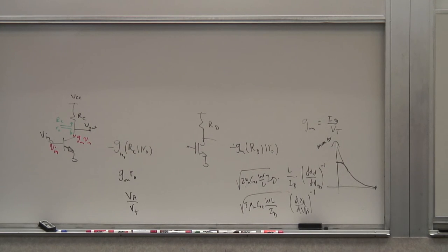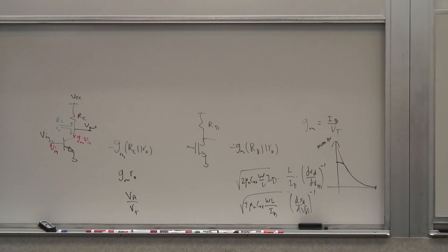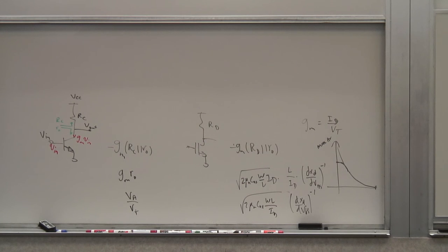In sub-threshold, the dependence of drain current on gate voltage becomes exponential, so gm dependence on current would be something like ID/VT — more like a bipolar. If gm is proportional to ID/VT, then gm·RO has ID canceling, so instead of going to infinity, the maximum intrinsic gain plateaus at a level determined by that sub-threshold behavior. If you want the highest gain from a MOSFET, you operate it in sub-threshold — lowest current consumption, highest gain, but extremely slow.